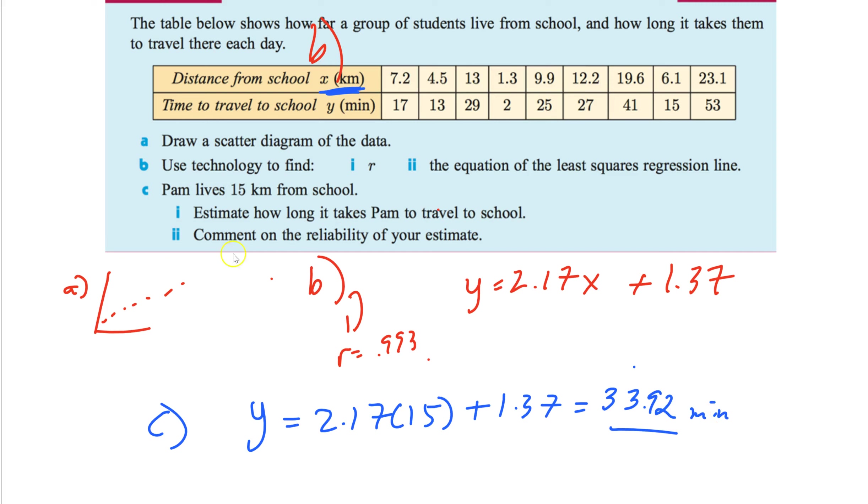Now B. Comment on the reliability of your estimate. Now remember. All we care about is what we're plugging in. If that falls within our range here. Then it's going to be a good estimate. If it falls outside the range. So if they want me to estimate how long it takes to get to school. She lives 100 miles away. That falls super. 100 kilometers away. Sorry. That falls way outside the range. So it would be a bad estimate. This one. 15 falls within our data set. So we're going to call that interpolation. Interpolation. And it's a good estimate. Or it's reliable.